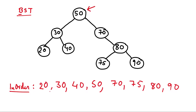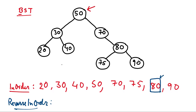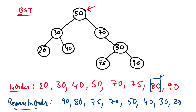This is the in-order traversal, and all the elements are in sorted order. An obvious solution is that since we want the second largest element, the largest is at the end, so the second largest is the second-to-last element. We would need to complete the entire traversal, so another way is to reverse the in-order: traverse the right subtree first, then the current node, then the left subtree. That prints 90, 80, 75, 70, 50, 40, 30, 20.